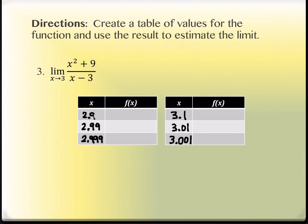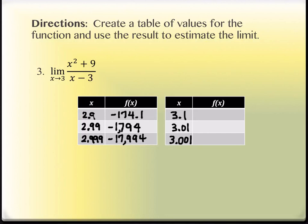The first y value at x = 2.9 is negative 174.1. The second is negative 1794, and the third is negative 17994. So we went from negative 174 to negative 1794 to negative 17994.